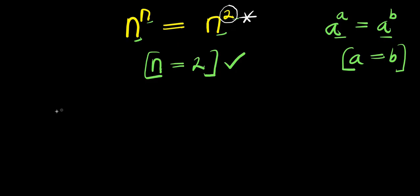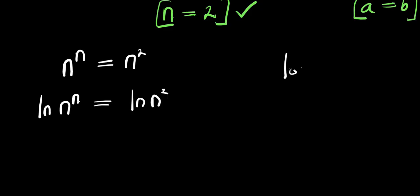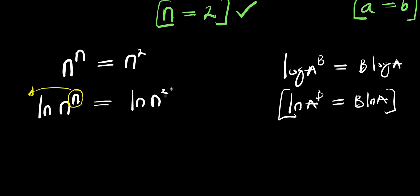How are we going to find all the values of n? We are going to make use of natural log. So I have natural log of n power n equals natural log of n power 2. If you have log of a power b, this gives you b times log of a — so natural log of a power b gives you b times natural log of a. That means the n comes in front and the 2 comes in front, giving us n times natural log of n equals 2 times natural log of n.